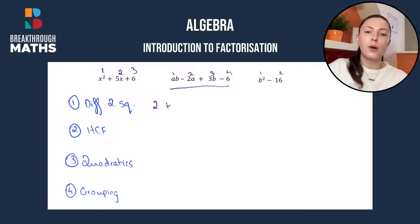Difference of two squares, like in the name, has two terms. Highest common factor normally has two terms but sometimes it can have three terms. Quadratics always has three terms and grouping always has four terms.